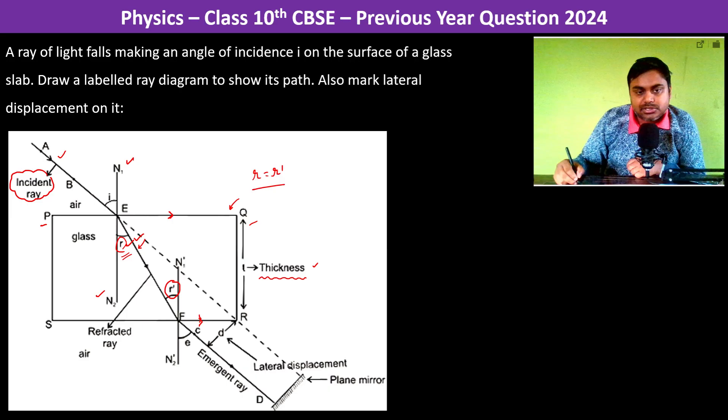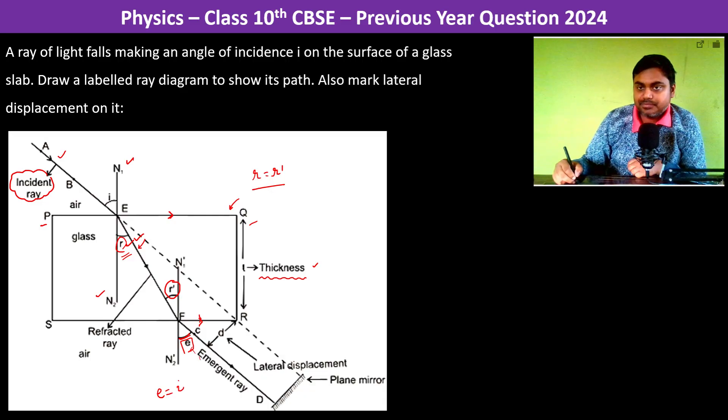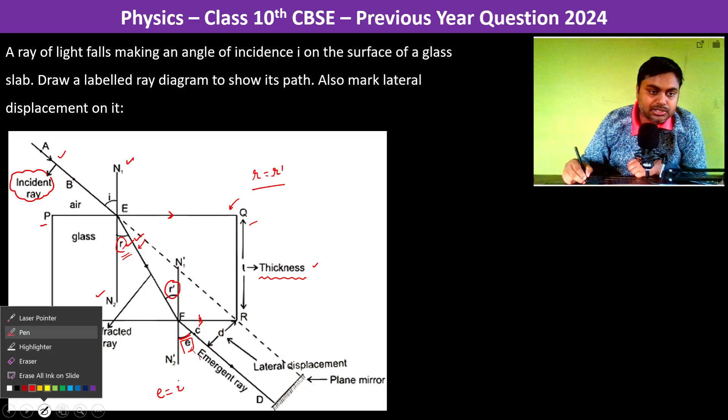Now since r is equal to r', what will happen is the emergent ray will have an angle e which will be equal to the angle of incidence. How so? Let us see.